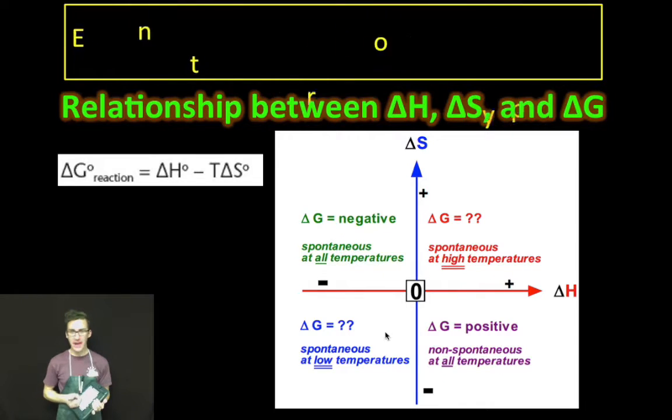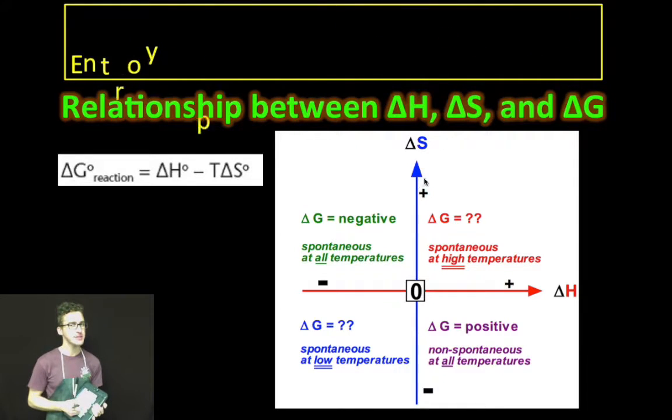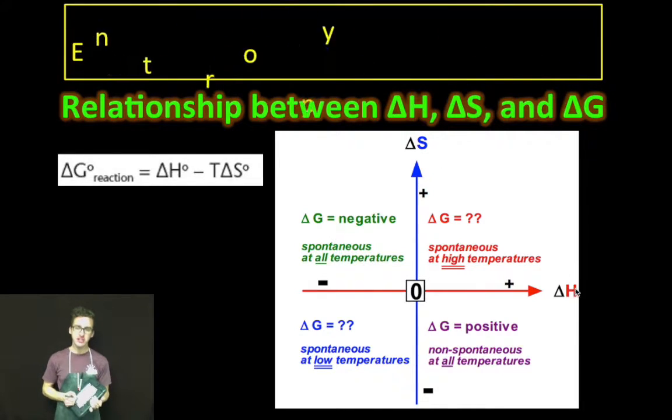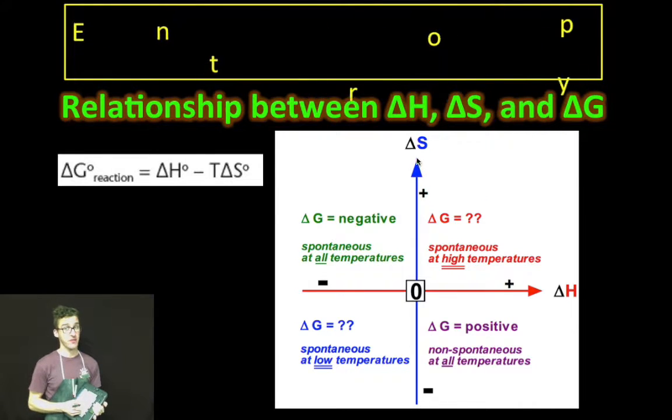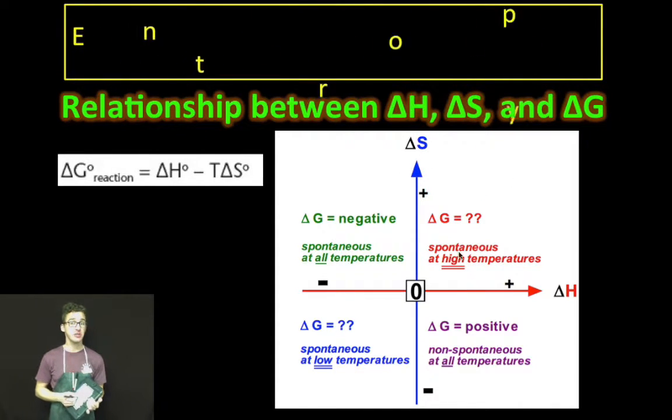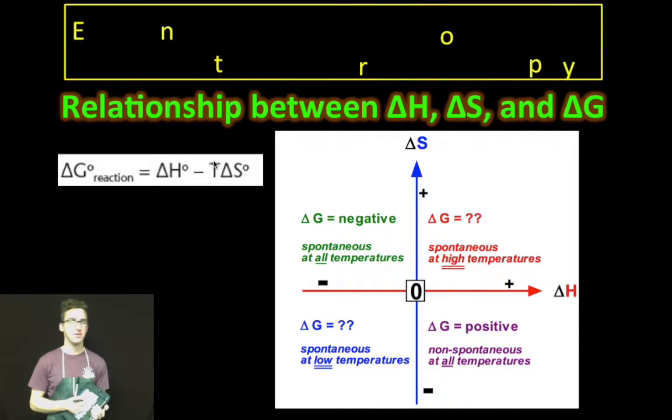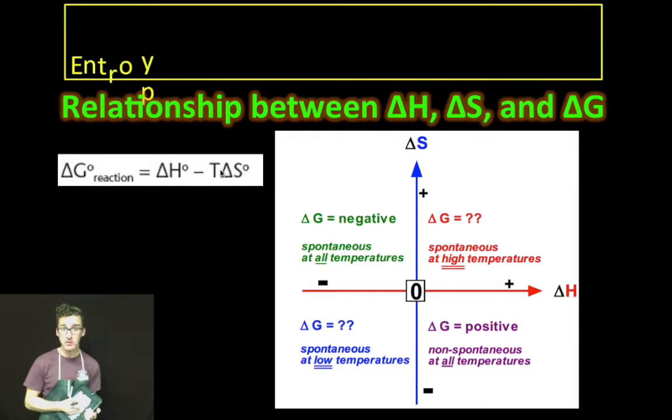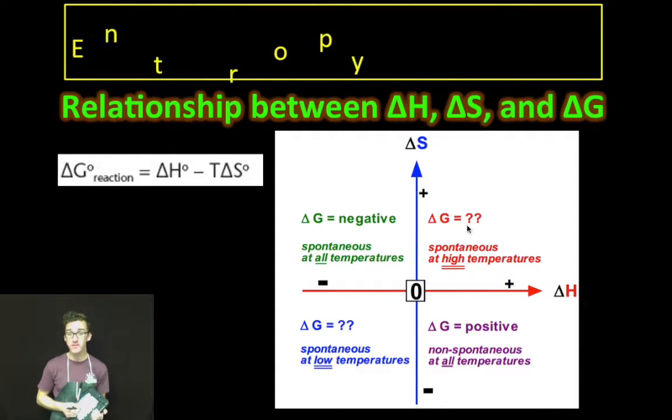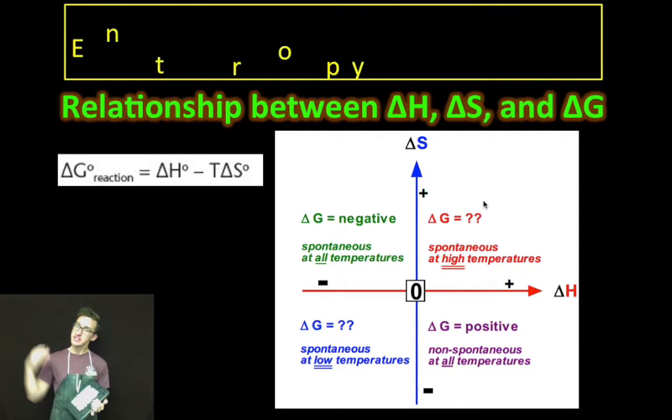If delta S is positive and delta H is positive, one of those terms is thermodynamically favorable. One of them isn't. Delta G will be spontaneous, but only at high temperatures. Come back to this equation. And the only way to get a spontaneous reaction is if this T delta S is larger than your delta H. That's only going to happen when T is really high. But notice where it falls in the coordinate plane. It's up top.